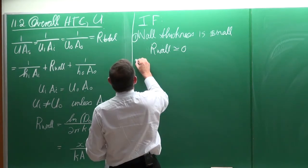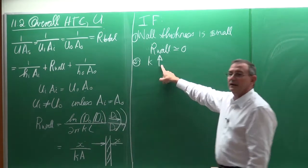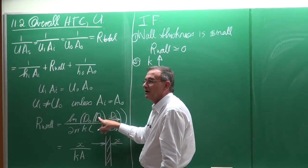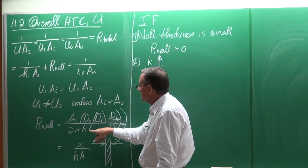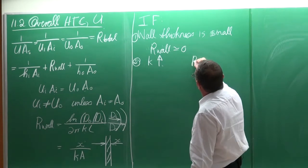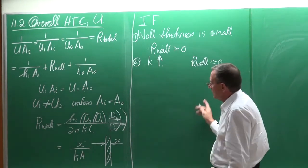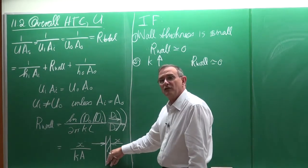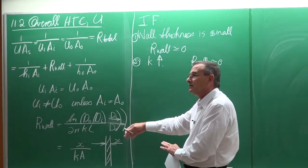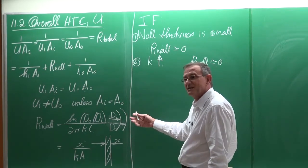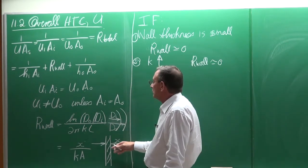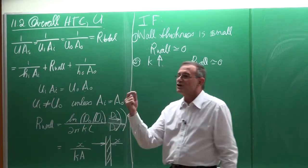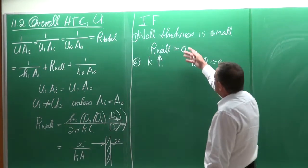The second condition is that K, the thermal conductivity, is high — typically for copper it's around 280. Again, you would have the log of approximately 1 divided by a high number, so the wall resistance would be essentially zero. These days there are many plastic heat exchangers — many car radiators are made from plastic. In those cases, the resistance of the wall is also nearly zero, not because thermal conductivity is high, but because the walls are so very thin.